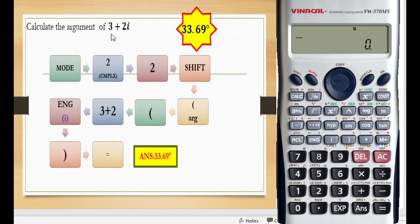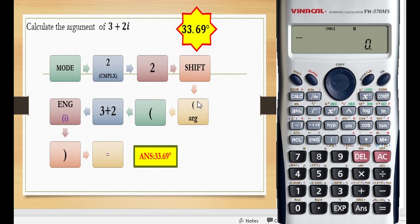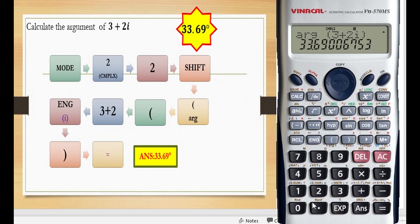Calculate the argument of 3 plus 2i. Press mode, then 2 for complex, press button 2. Then press shift open bracket for ARG — you can see the ARG function here. Open bracket, key in 3 plus 2i — ENG for i — close the bracket, and press equal to. You will get 33.69 degrees.